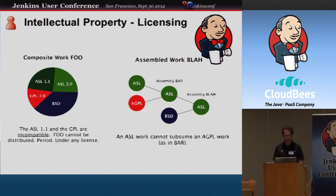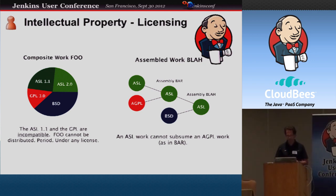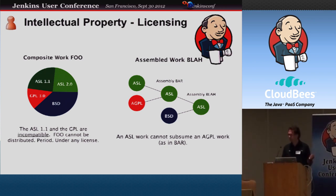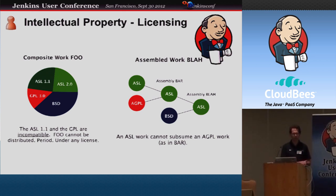Here's a scenario for a composite work — call it FOO. This software is using a whole bunch of components: one licensed under Apache Software License (ASL) 2.0, another under BSD, another under ASL 1.1, and another under GPL 3.0. If you have software like that, you cannot actually legally ship it, because you cannot combine Apache Software License 1.1 and GPL 3.0. So by law, you can't actually ship that under any license. But under most circumstances, you wouldn't even find out about that.